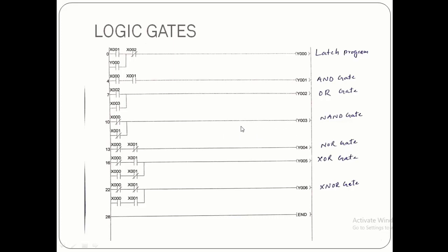The NAND gate works oppositely to the AND gate. For the AND gate when both inputs are 1 the output is 1, but for the NAND gate when both inputs are 1 the output will be 0. When one input is 0 and the other is 1, the NAND gate output will be 1. The NOR gate works inversely to the OR gate.